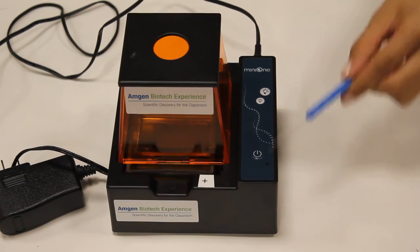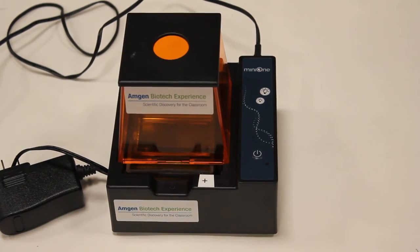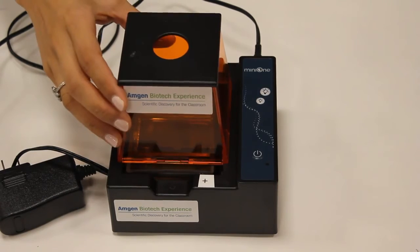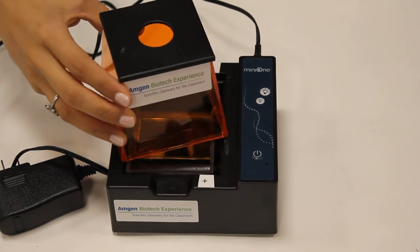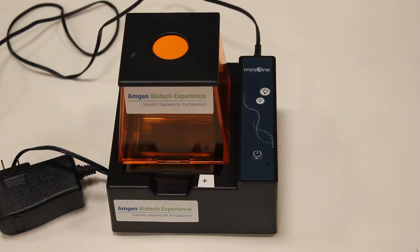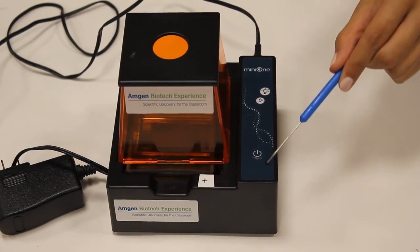The hood must be on in order to run the gel box. As soon as the hood is removed, the power will turn off. You will know that it is running when the green light is turned on the whole time.